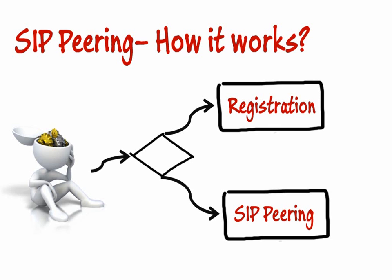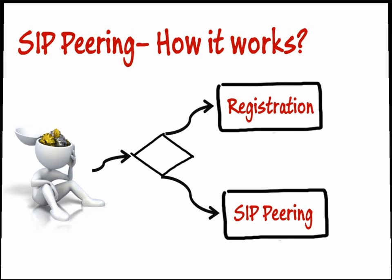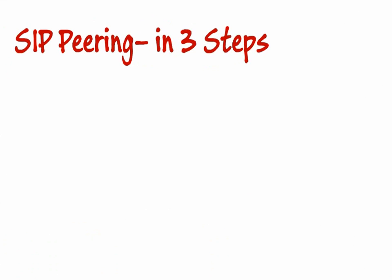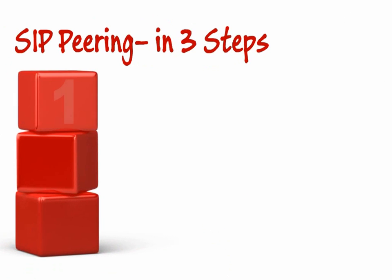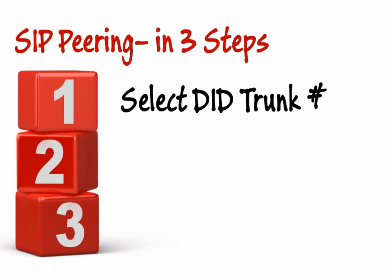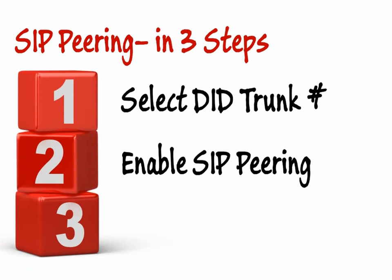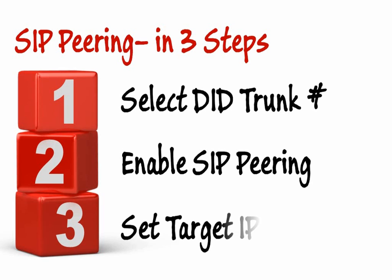Through our portal the process takes a minute to configure. You're basically selecting a DID which will become your primary trunk number or a SIP trunk. Secondly, enabling a SIP pairing which isn't much other than enabling a checkbox. And lastly, setting a target IP address which we will ultimately route all calls to.